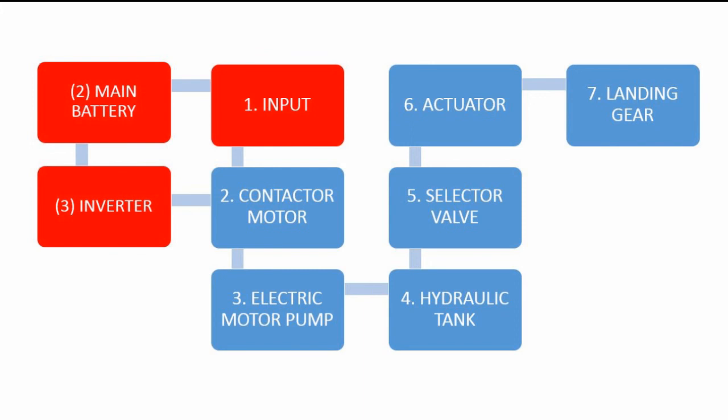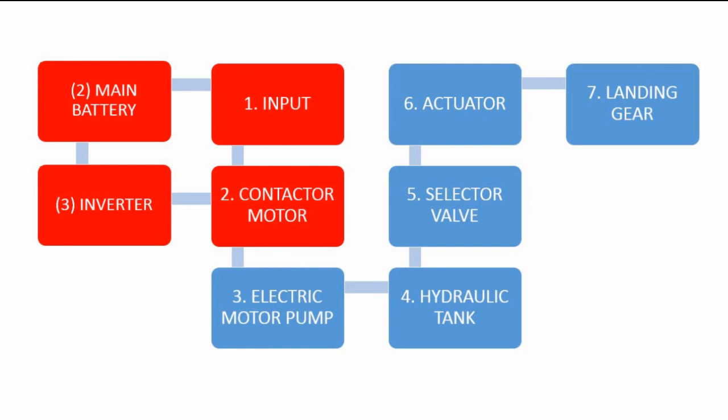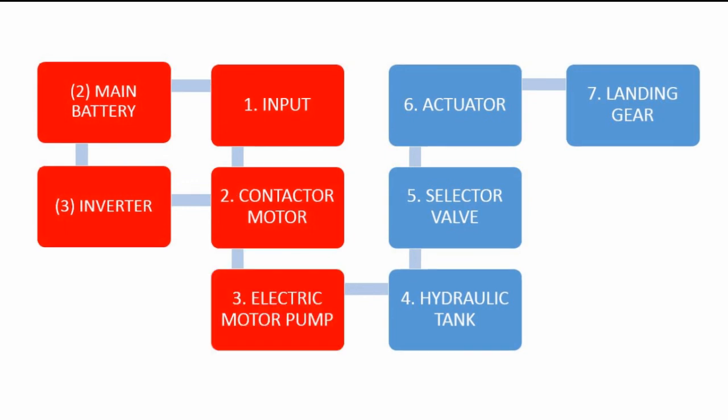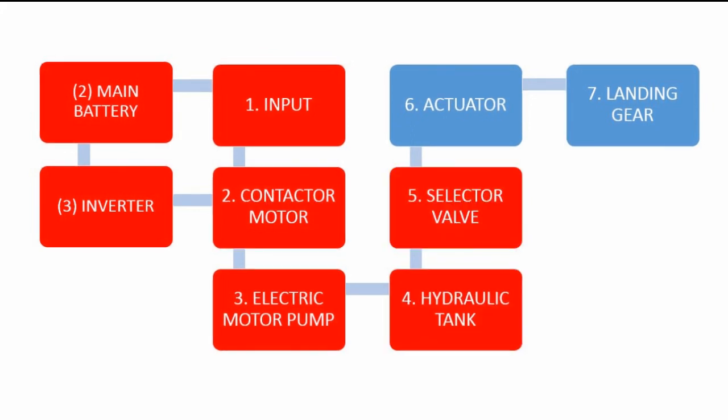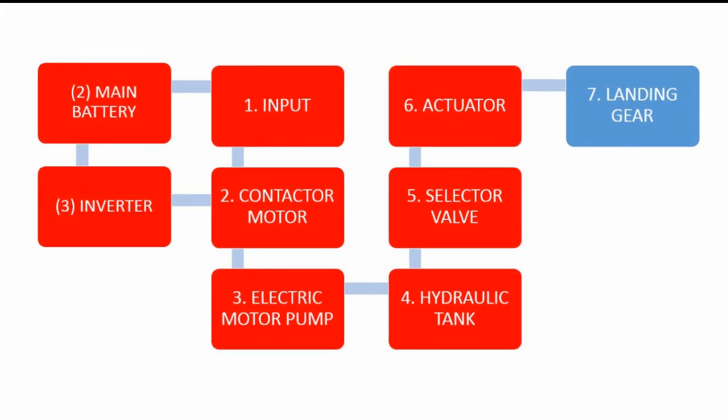The current will then be directed to the motor contactor. Here, high current will flow from the motor contactor to the electrical pump motor. The pump motor will convert direct current into mechanical energy to provide pressure for the hydraulic system. The hydraulic fluid will be directed by the selector valve based on the input. Finally, the hydraulic pressure will move to the actuator resulting in the landing gear motion.